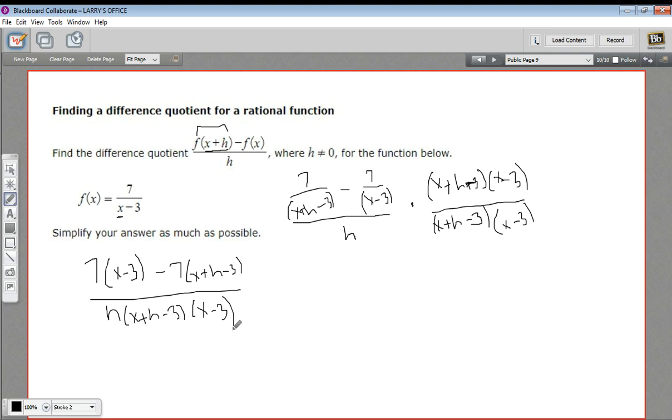May not look a lot simpler yet, but we have a ways to go. We can distribute now. We can distribute the 7s here and the negative sign and see what happens. So distributing this 7, I'd get 7x minus 21.